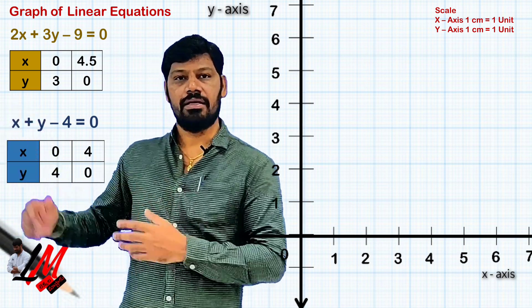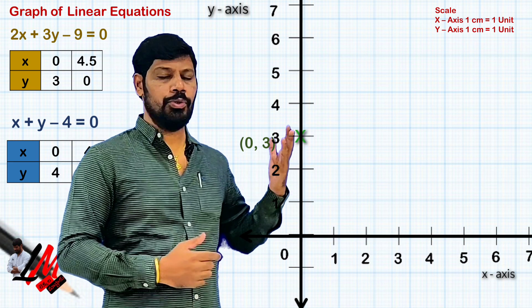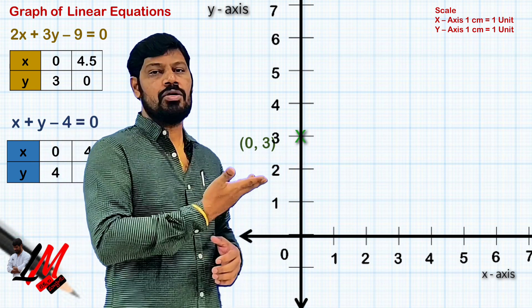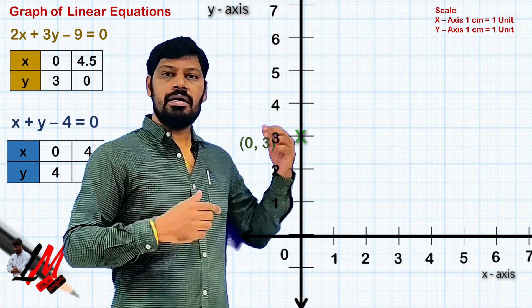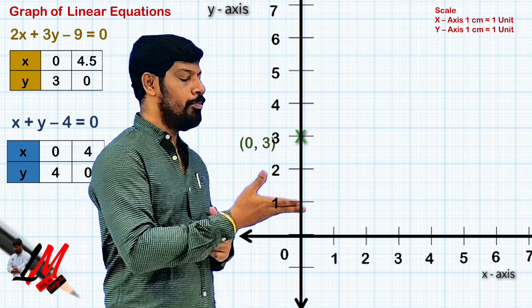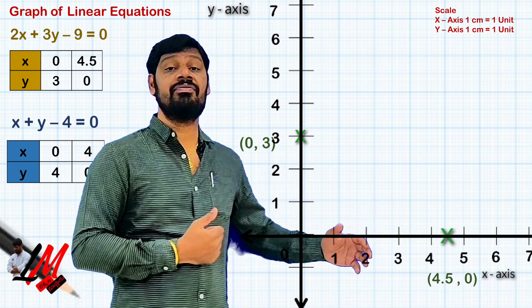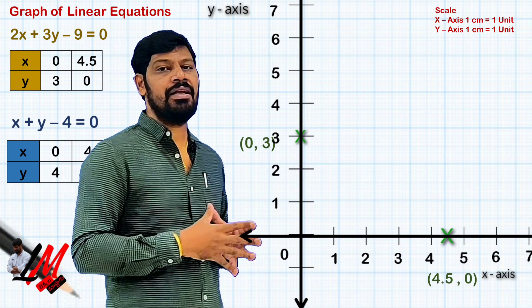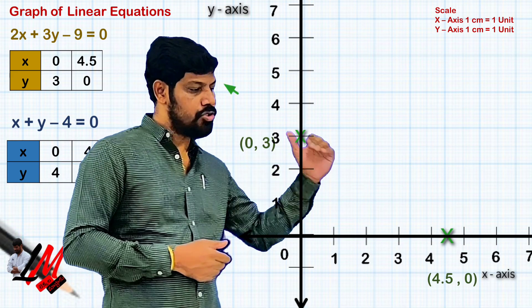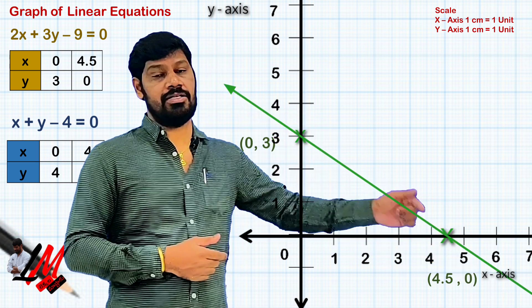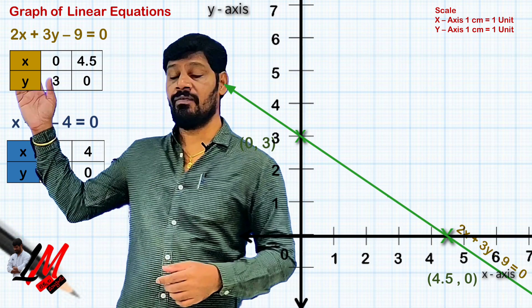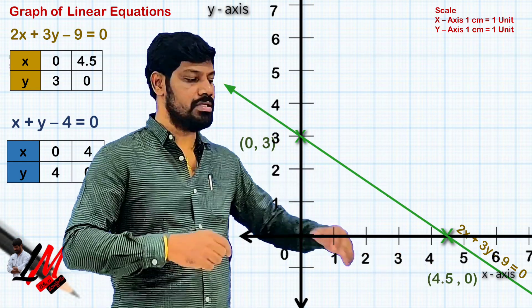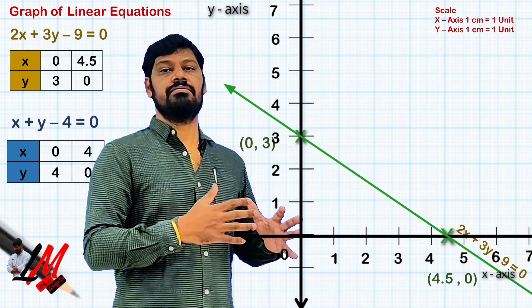For the first equation, mark (0, 3) on the y-axis and (4.5, 0) on the x-axis, writing both coordinates clearly. Join these points, add arrow marks in both directions, and write the equation 2x + 3y − 9 = 0 along the line. Plotting points, drawing the line, adding arrow marks, and writing the equation should all be done together.